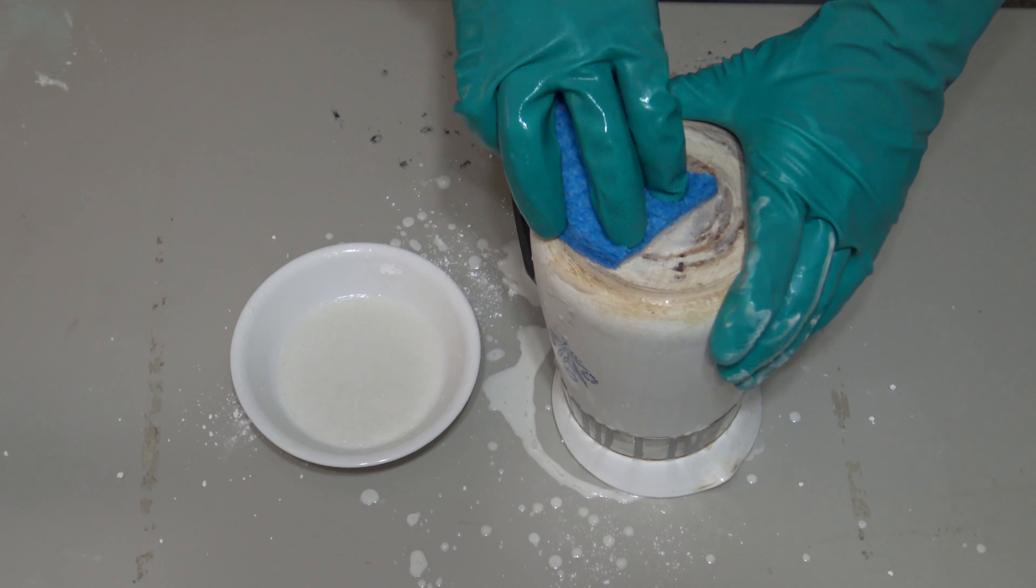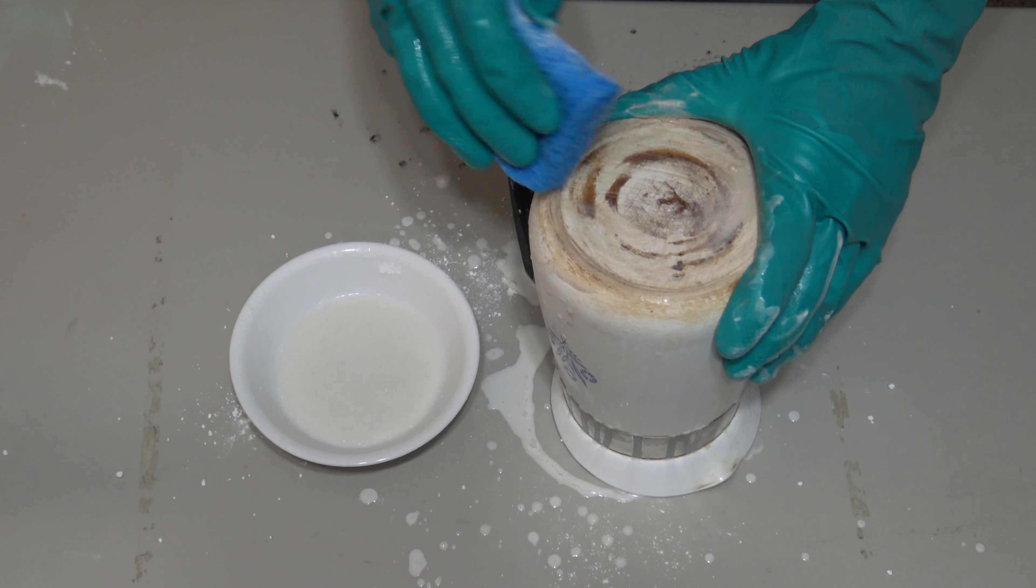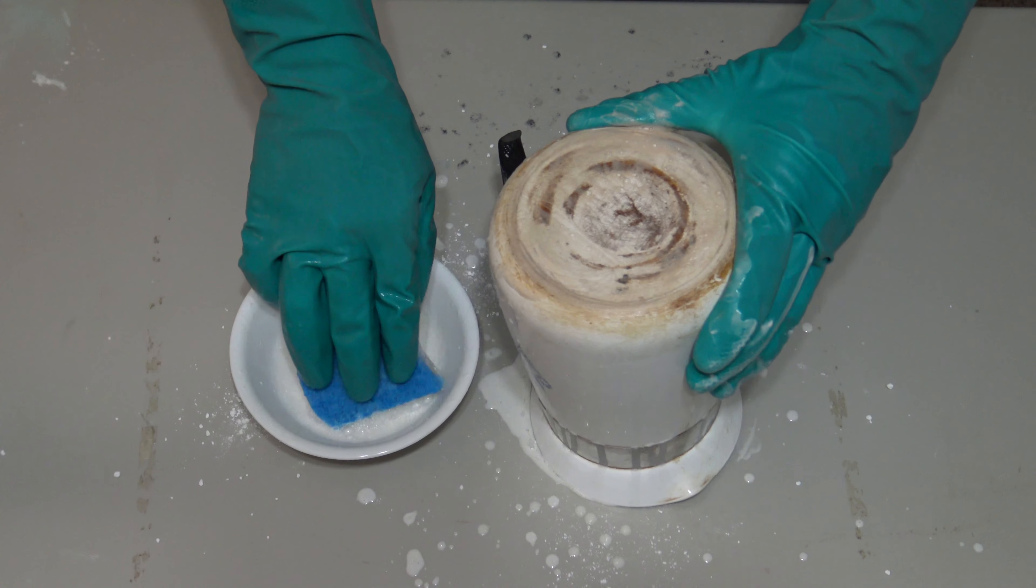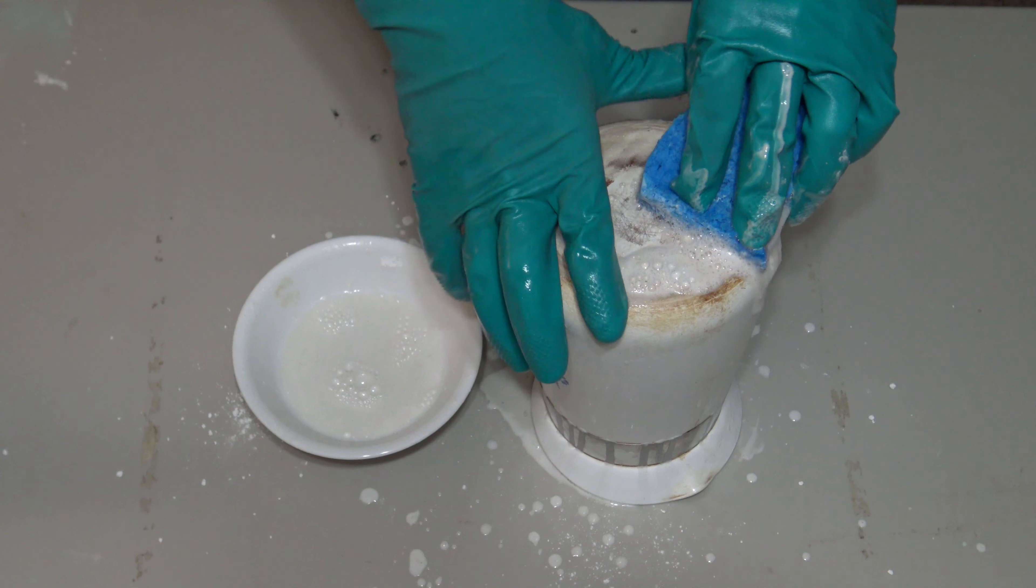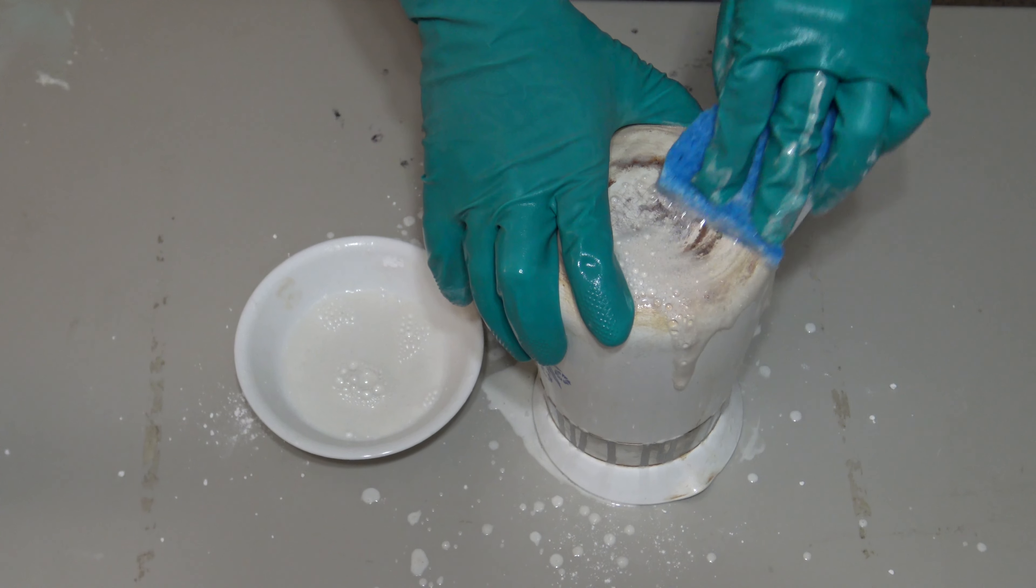During this time, it will begin to loosen up that burnt char, making it easy to clean. After the minute is over, dampen your sponge and scrub the pot in small circular motions.